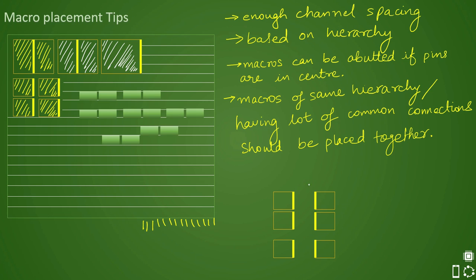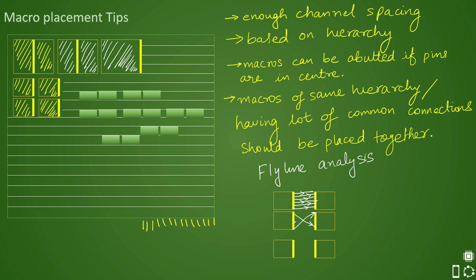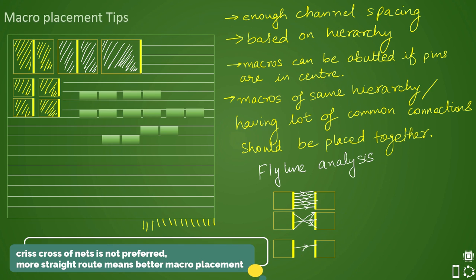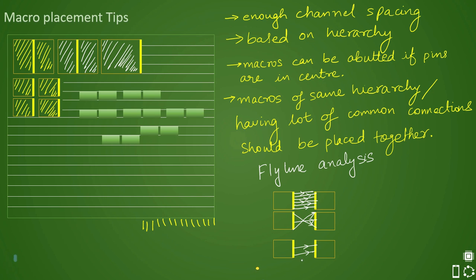The question is how do we identify which macros have more connections with another macro. This is done through fly line analysis. A fly line is a terminology used for understanding net connections from one macro to another — the more fly lines passing through, the more connections are present. When you select macros and enable fly lines, it shows connections going from that macro to other macros with direction indicated by arrows for input or output. More such connections means these macros should be placed closely, otherwise the connecting nets spread across the design resulting in congestion. For a good floor plan, we must know the data flow from one macro to another.